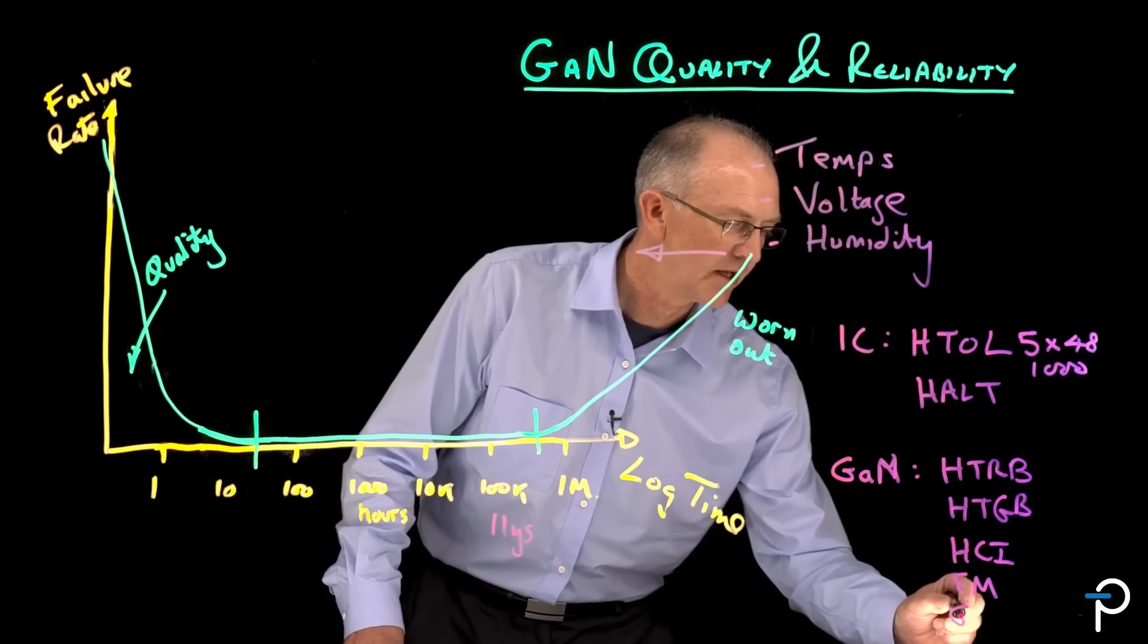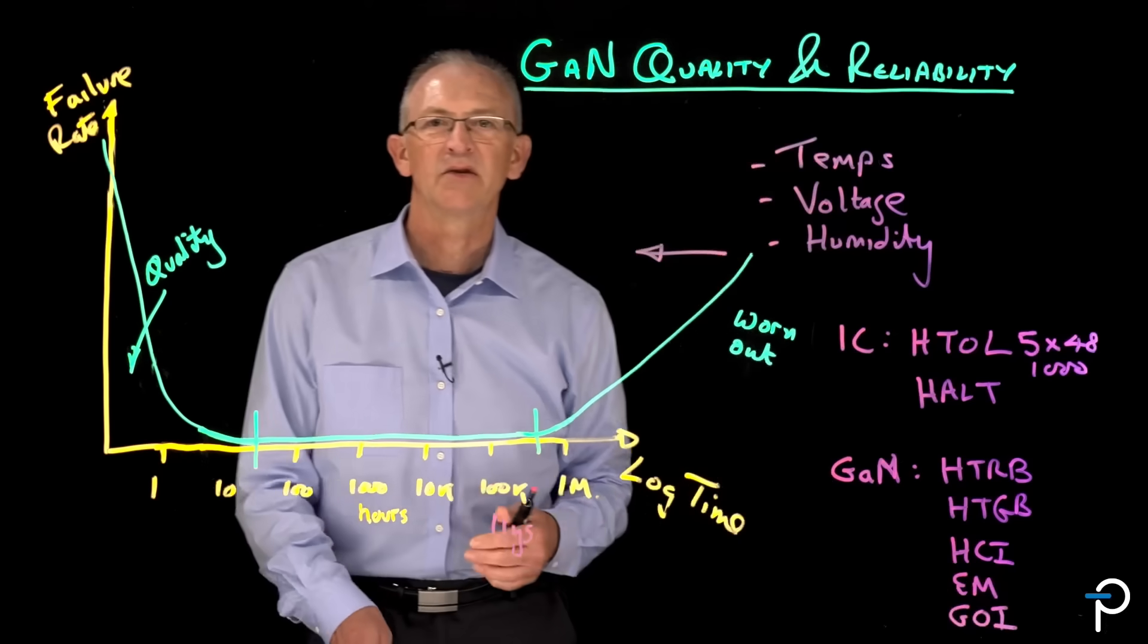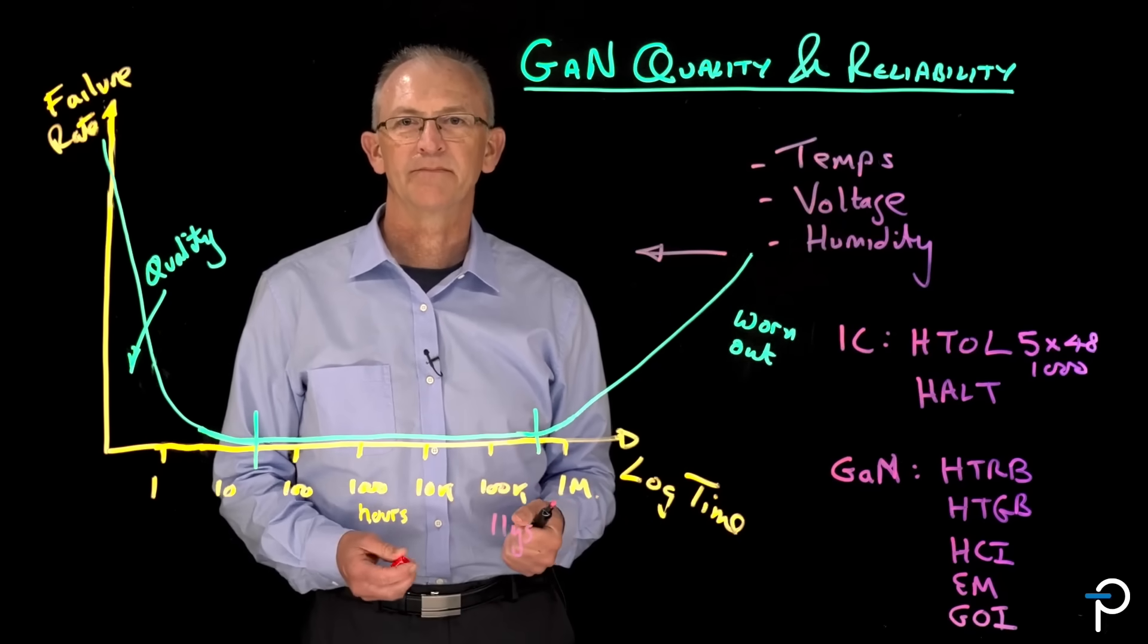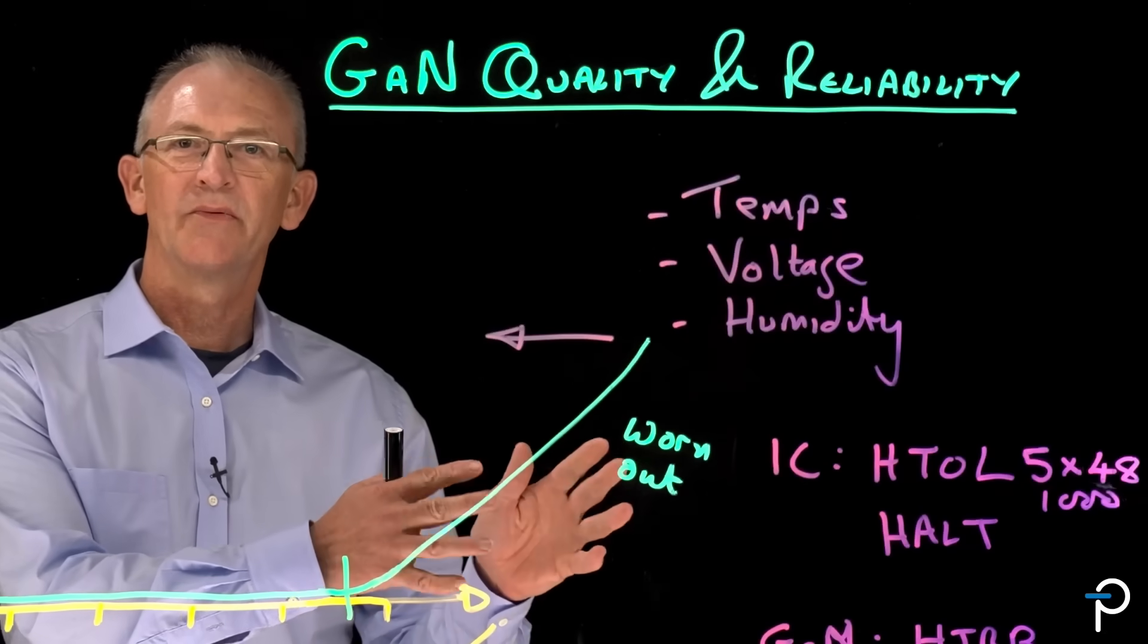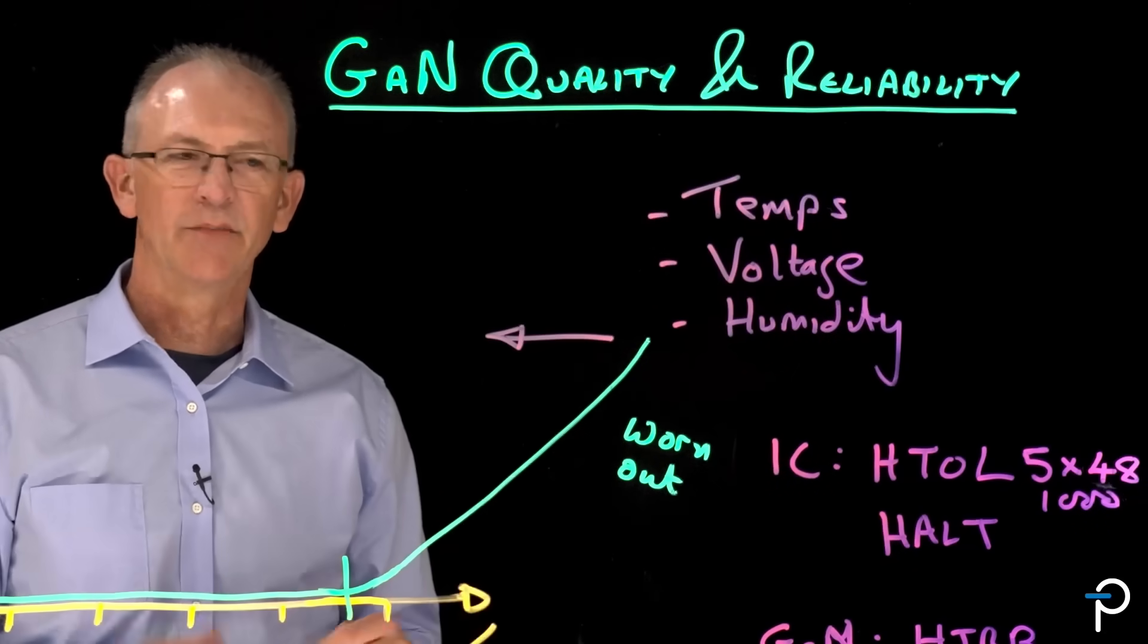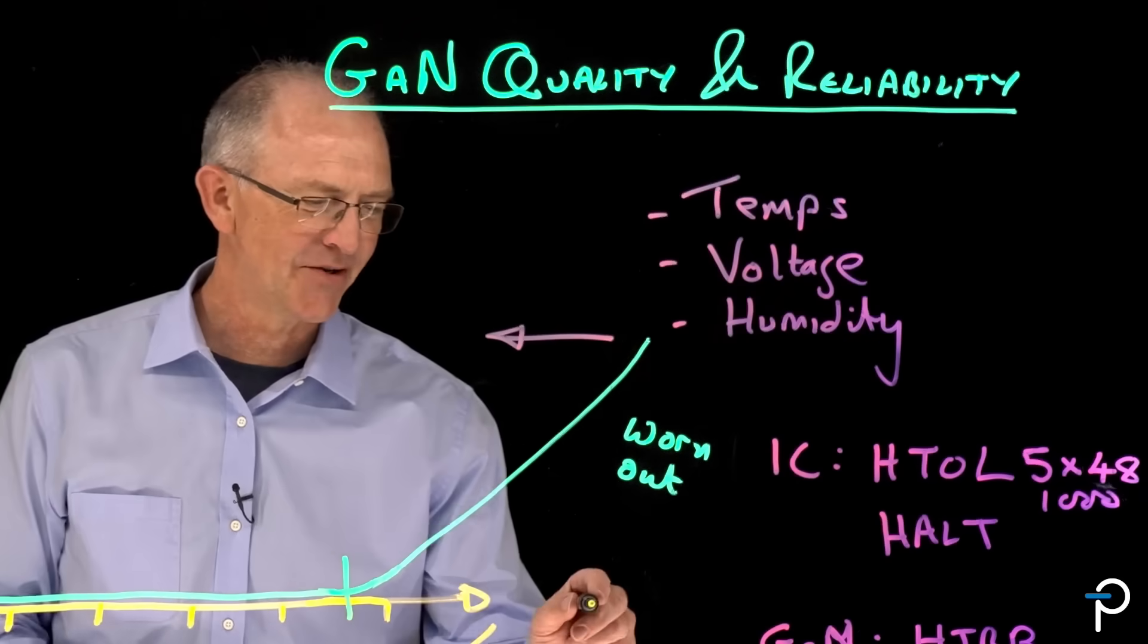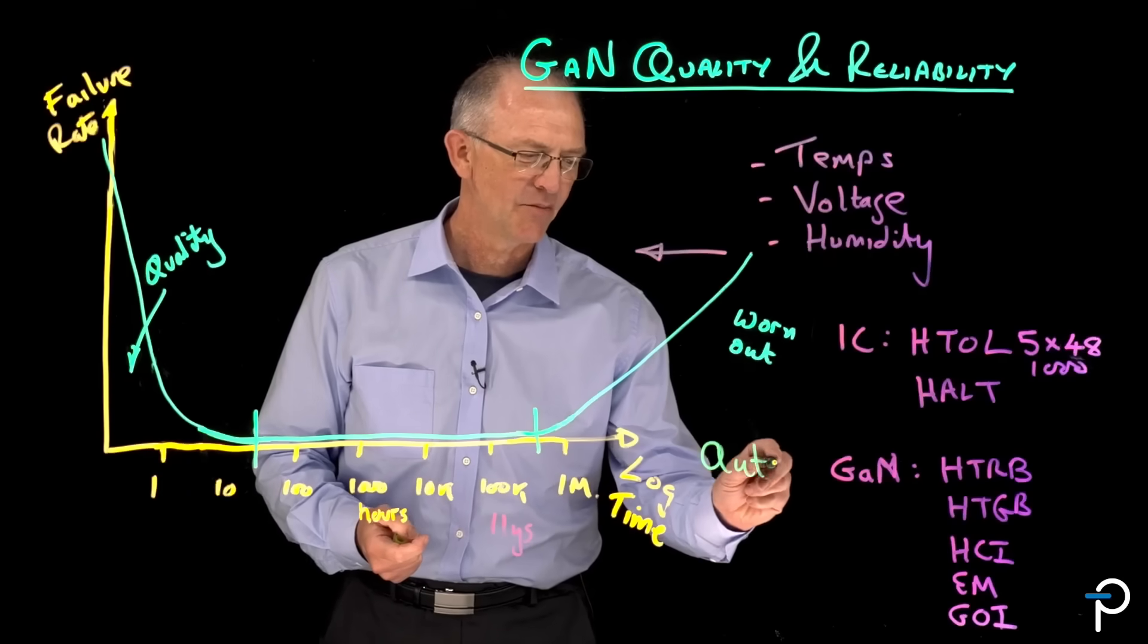And we do a gate oxide integrity test to improve the strength of our gate. So these are the tests we run for industrial and commercial customers. But what about automotive? Automotive folks like GaN too. So we run more tests.